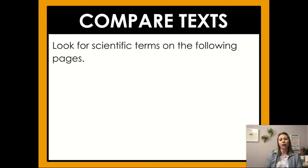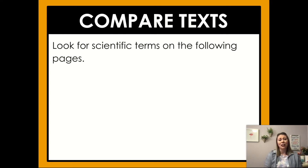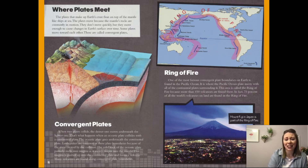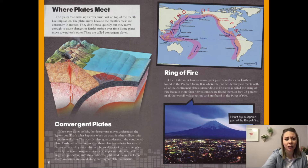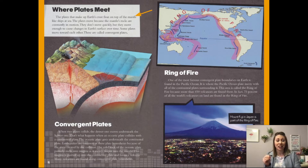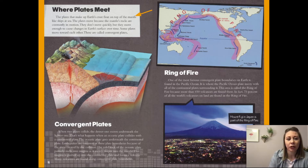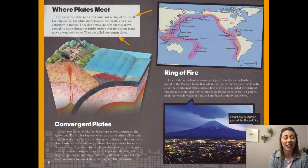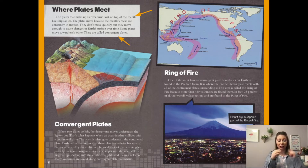We can also look for scientific terms in the text to compare — this is where we think about the author's word choices. Looking back at the text: 'The plates that make up Earth's crust flow on top of the mantle, like ships at sea.' The word mantle is a scientific term telling you a part of the Earth's structure — not what's over your fireplace, but the mantle in the Earth's crust. 'Some plates move toward each other. These are called convergent plates.' That is a very specific scientific term — convergent plates move toward each other.